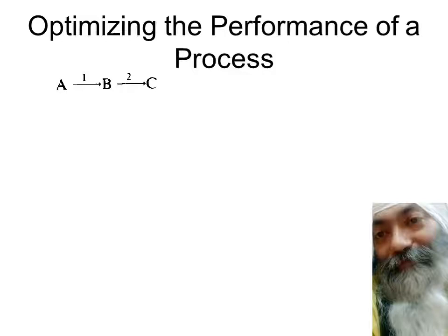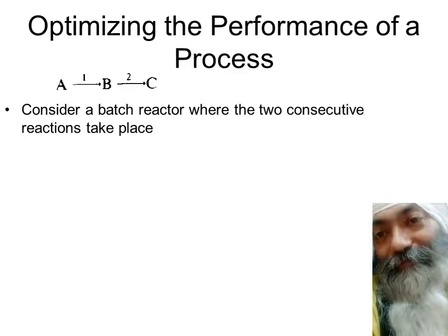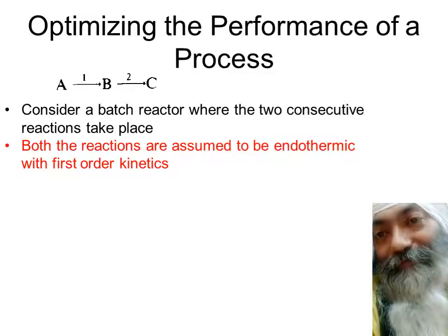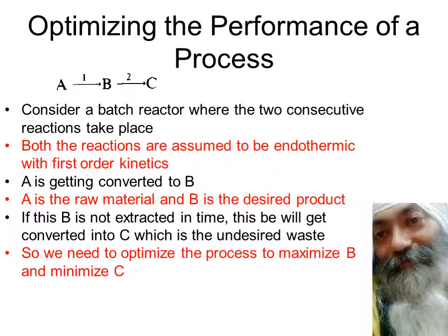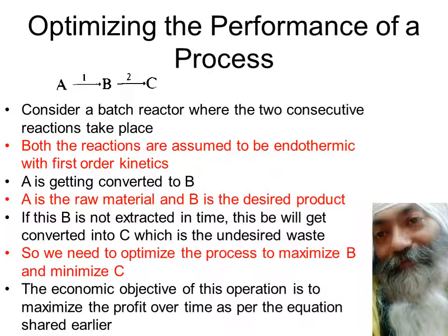Once again, A is getting converted to B — this is the first reaction. B is getting converted to C — this is the second reaction. So we have a batch reactor where two consecutive reactions take place. Both reactions are assumed to be endothermic, meaning they require steam. They require heat transferred to move the reaction in the forward direction, and we assume first-order kinetics. B is the desired product, and if it is not extracted in time, it gets converted into C, which is the undesired waste. We need to optimize the process so that B is maximized and C is minimized, along with minimization of steam.